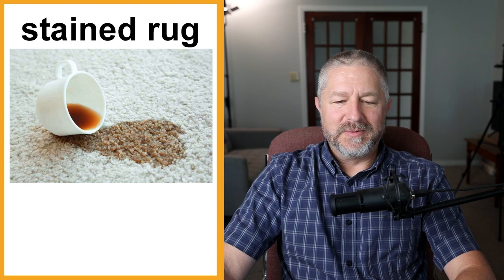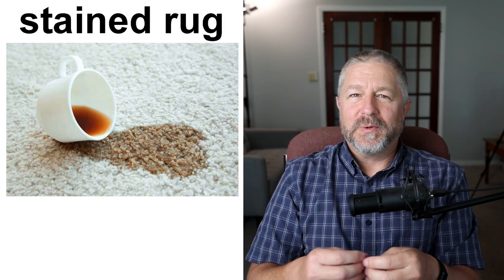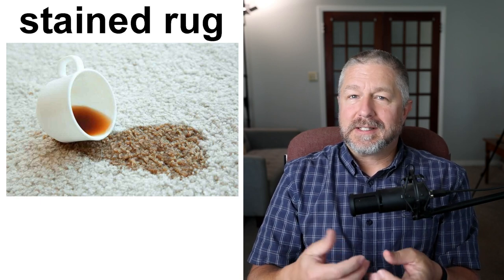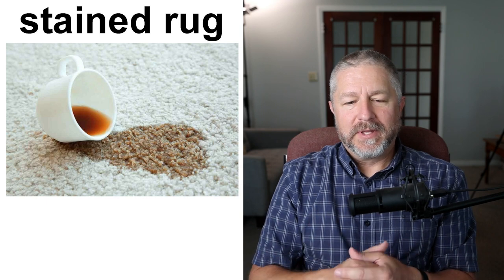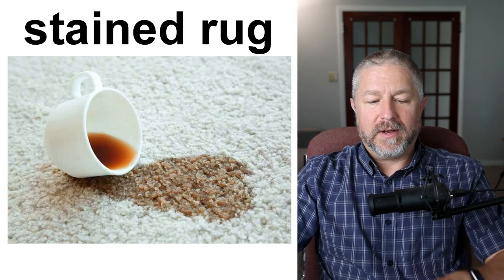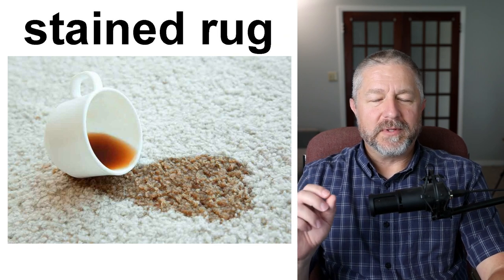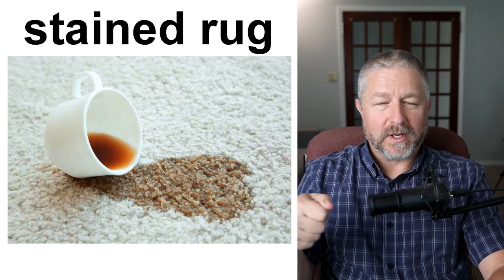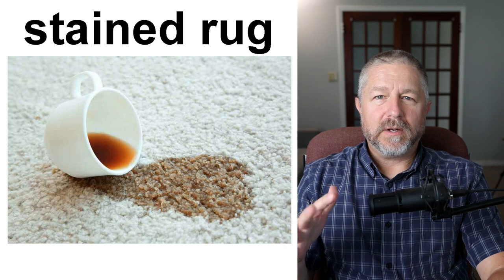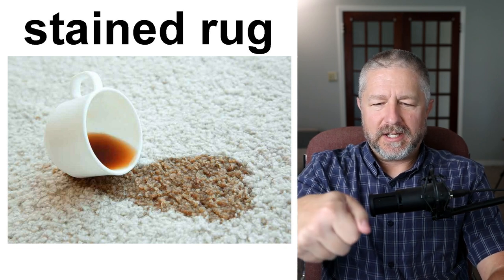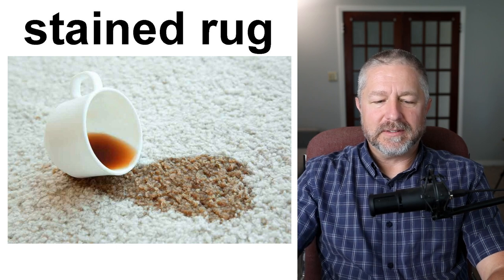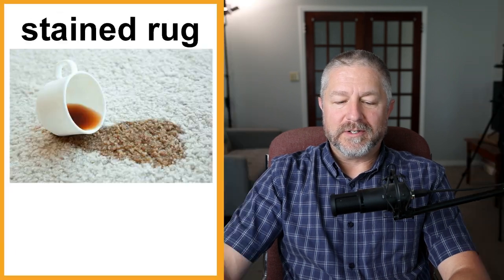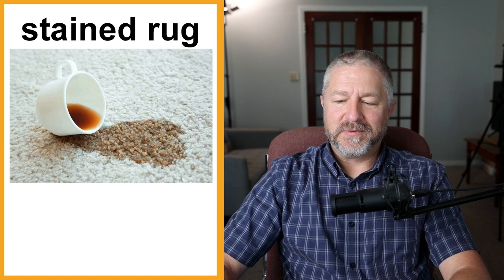A stained rug. If you drop your mug of tea or coffee on the floor, it might stain the rug if it's a light-colored rug. If you want to clean a stained rug, you might get a scrub brush and scrub the floor with soap and water. But if you can't get the stain out, you might rent a carpet cleaner — a machine you can use to clean your carpet. If you spill coffee or tea, you should immediately scrub the floor with soap and water to try and get the stain out.